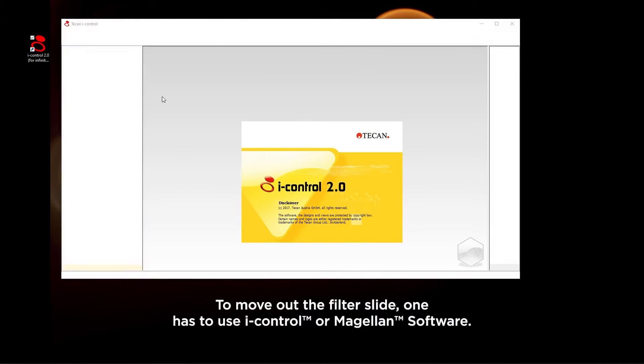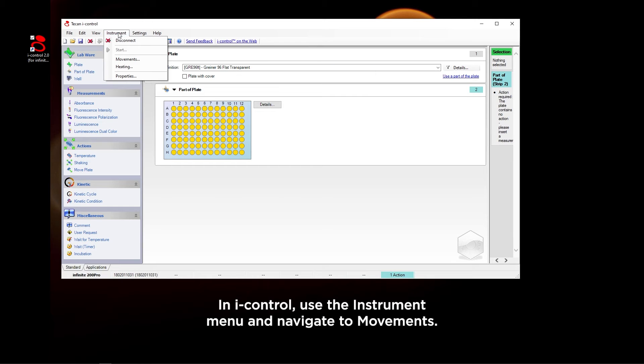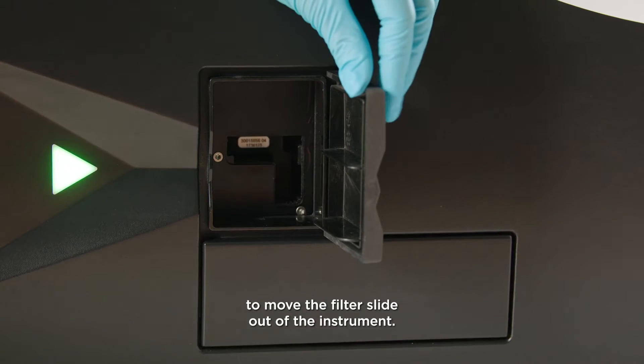To move out the filter slide, one has to use iControl or Magellan software. In iControl, use the instrument menu and navigate to Movements. Then use the Filter Out button to move the filter slide out of the instrument.